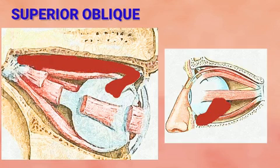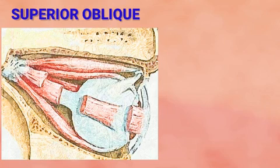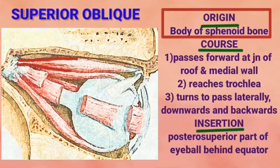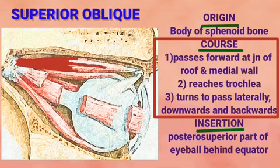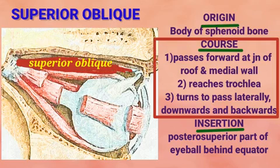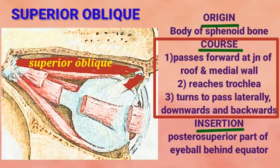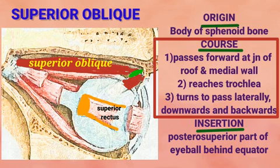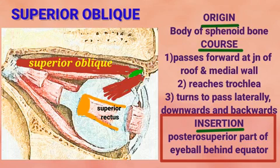Both the superior oblique and inferior oblique, unlike the recti muscles, originate from the bony part of the orbit. The superior oblique arises from the body of the sphenoid medial to the optic foramen. After its origin, the muscle passes forward at the junction between the roof and medial wall of the orbit and reaches the trochlea of the superior orbital margin — a thick fibrocartilaginous pulley attached to the trochlear notch, a projection in the supraorbital margin. From the trochlea, the muscle diverts and passes backward, laterally, and downward below the superior rectus, inserting into the sclera behind the equator in the posterior superior quadrant of the eyeball.